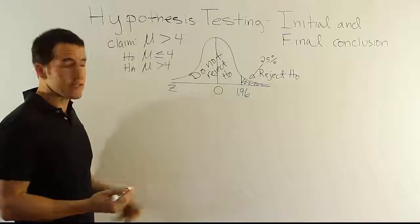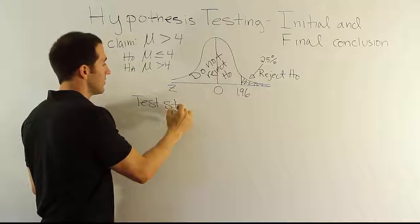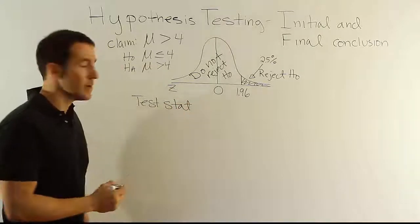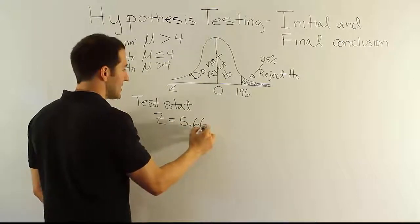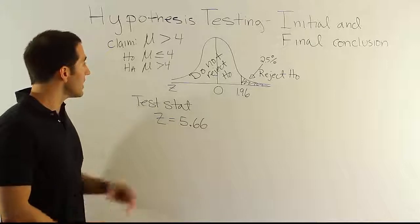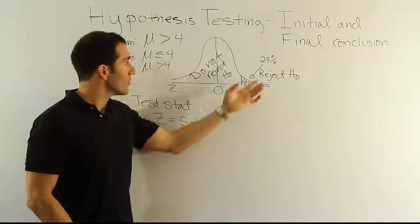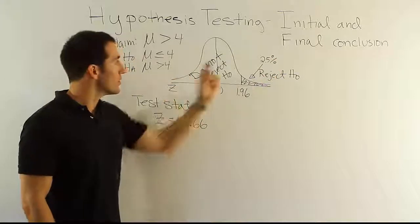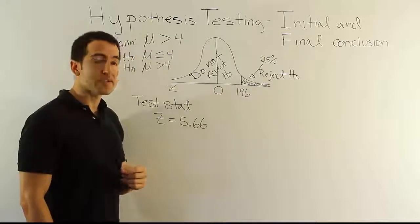We also had a test statistic. That test statistic was z equals 5.66. So it was a very large, very extreme test statistic. And then we came up with a critical value. We had that critical value. We assumed that alpha was 2.5%, and we had then a critical value of 1.960.